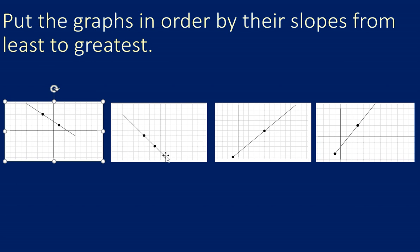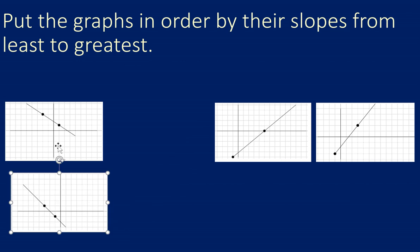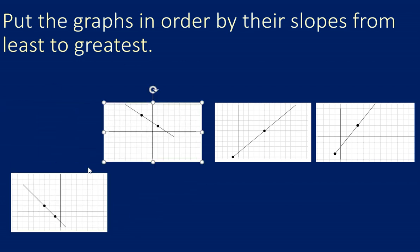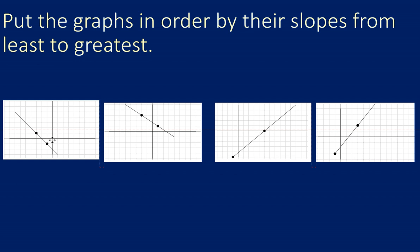And this one looks more steep to me so being that it's negative, being more negative means it's actually smaller, so we're going to put that all the way to the left. And so I feel good about my first two graphs that they're in the right order.